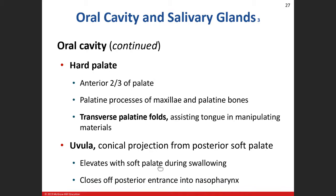Just behind the teeth on the anterior one-third of the hard palate are the transverse palatine folds. The tongue uses those rough folds to help manipulate food while forming the bolus. The tongue also has papillae — small bumps — some of which contain taste buds. Most papillae on the anterior portion of the tongue are primarily there to manipulate and move food around.